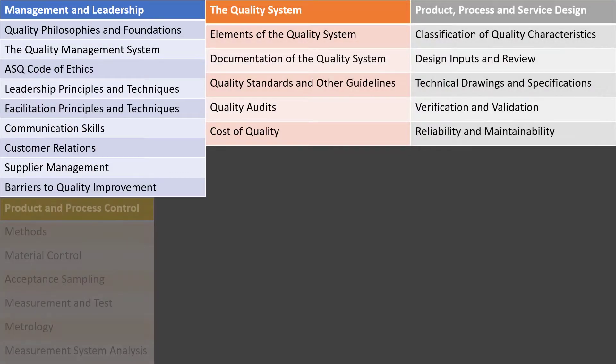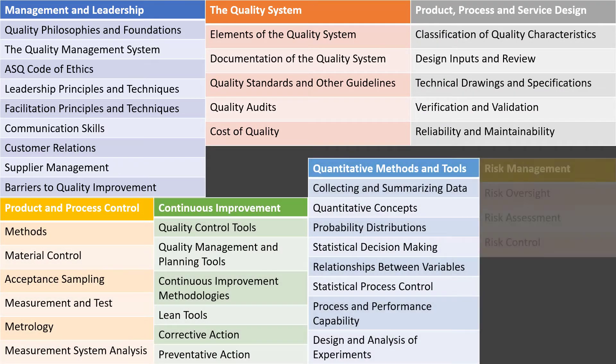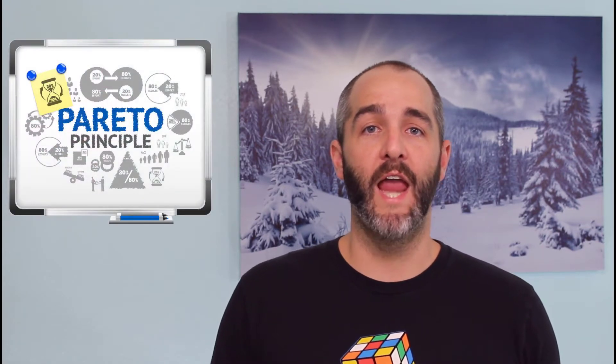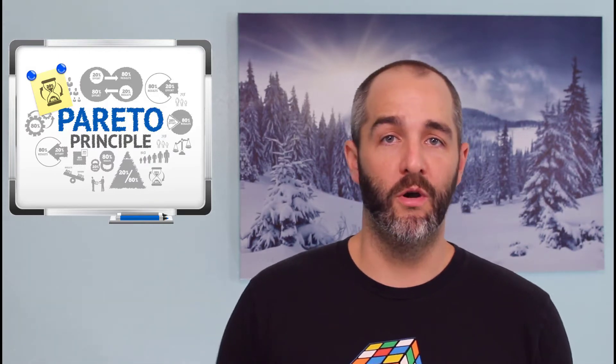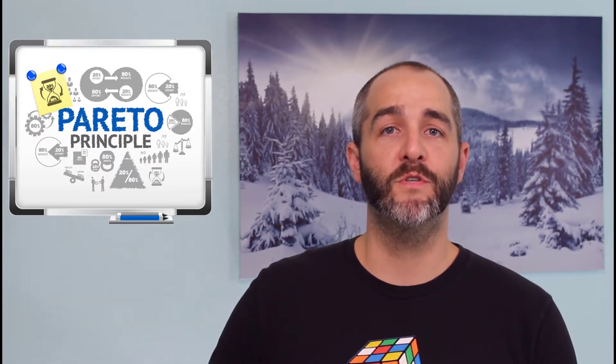The CQE exam is made up of seven different pillars from the body of knowledge, and within those seven pillars there are 42 individual topics on the CQE exam. But those 42 topics are not represented equally on the exam. This tip takes advantage of what's called the 80-20 rule or the Pareto principle, which tells us that 80% of our customer complaints come from 20% of our failure modes, or 80% of our sales come from 20% of our customers. This same concept applies to the CQE exam, where 80% of the exam questions will come from 20% of the topics — and that happens to be nine different individual topics.